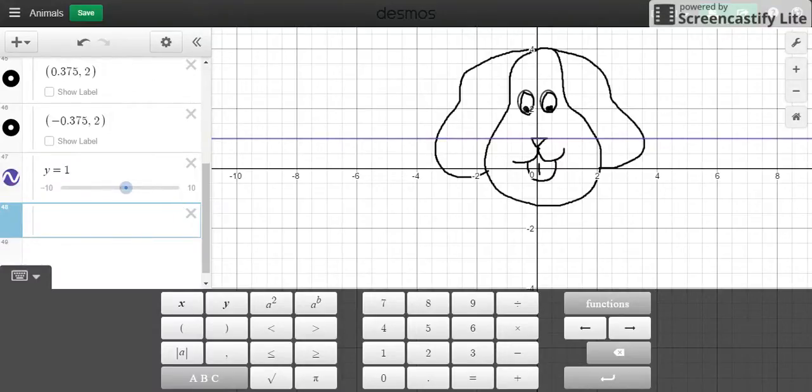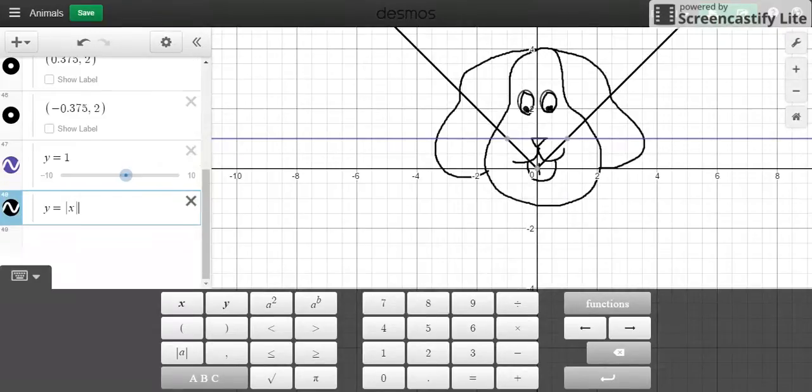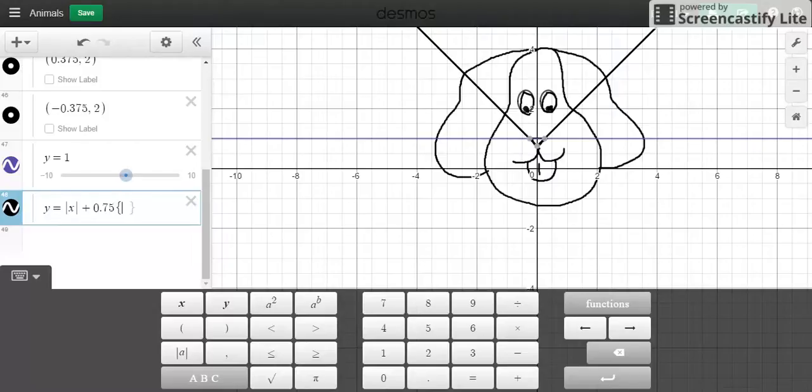And then you can start with the bottom part. Well, it's true that you can use two many equations, but it would be more effective if we use the absolute value equation. You can just bring it up to where you find fit. So you have to play around with these numbers. So for me, it's 0.75 or 3 fourths. And that's going to go from 0.75, y is less than 1.